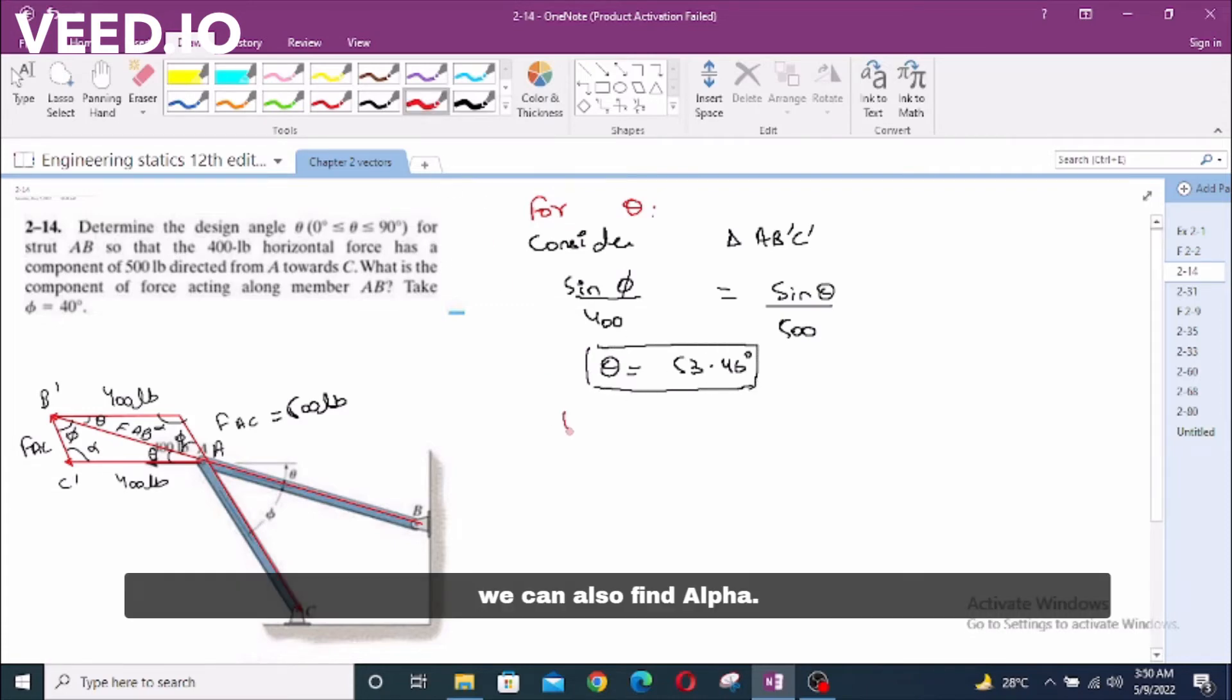We can also find alpha now. Phi and theta are forming three angles of a triangle. The sum should be equal to 180 degrees. From here alpha equals 180 degrees minus 53.46 degrees minus 40 degrees which is equal to 86.54 degrees.